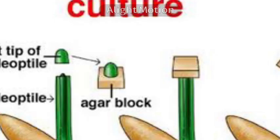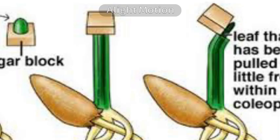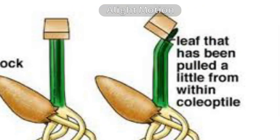Some time later, he placed pieces of agar on the decapitated coleoptile. Now this coleoptile had agar pieces on top. When it was exposed to sunlight, the decapitated coleoptile showed bending movement. That means the chemical responsible for the bending of the coleoptile, which is present in the tip, had diffused into the agar block. When the agar block was placed back, the same kind of response was seen.